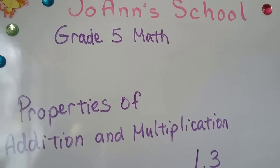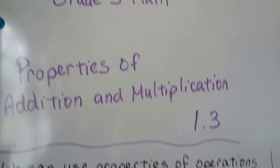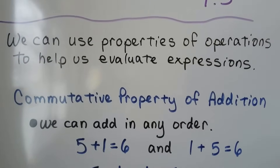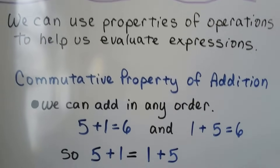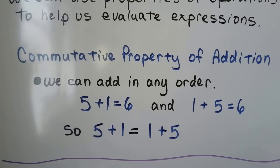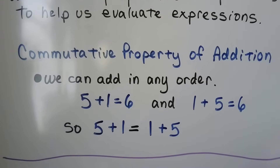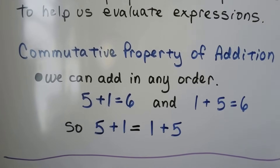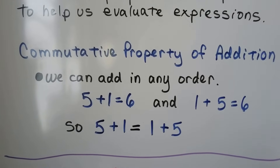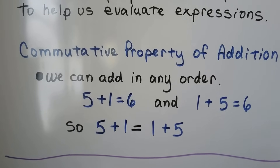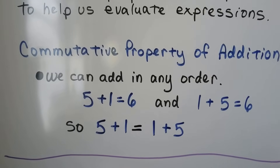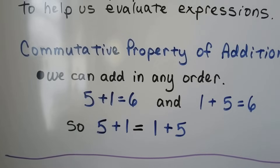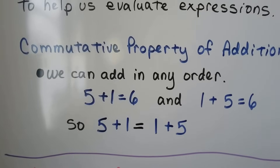Properties of Addition and Multiplication. We can use the properties of operations to help us evaluate expressions. The commutative property of addition says that we can add in any order. 5 plus 1 equals 6, and 1 plus 5 equals 6. They're equal to each other because they have the same sum — it doesn't matter the order that they're added in.